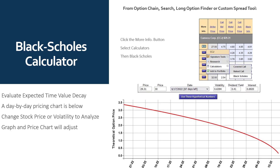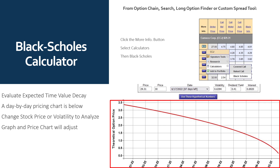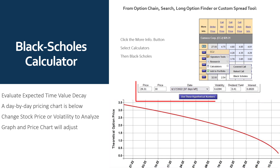The Black-Scholes calculator, which was also reviewed in the previous presentation, is accessible from the option chain, search, long option finder, or custom spread tool. Click the More Information button, go to Calculators, and select Black-Scholes. This evaluates a graph of the expected time decay of your option, with a day-by-day pricing chart below the time value graph. You can change the stock price or volatility above, then click Use These Hypothetical Numbers to analyze what-if scenarios. The graph and price chart will adjust based on the values you change.